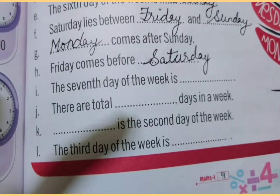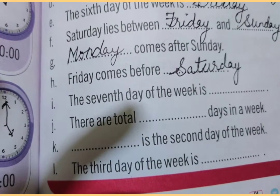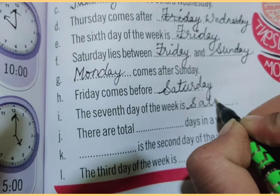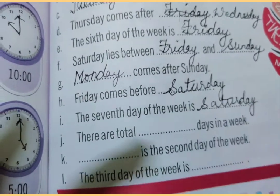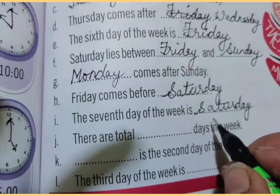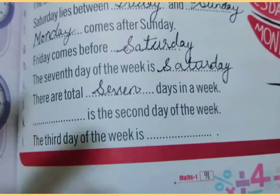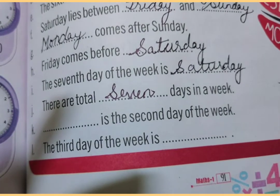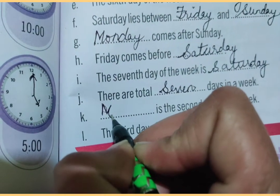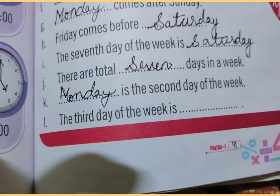Part I: the seventh day of the week is Saturday. Write Saturday. There are seven days in a week. Part K: the second day of the week is Monday. The third day of the week is Tuesday.